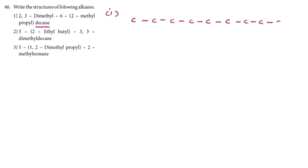The next position is 2,3-dimethyl. So in the 2nd position, there is a methyl group. In the 3rd position, there is a methyl group. Methyl group is CH3. In the 6th position, all terms are in this bracket.